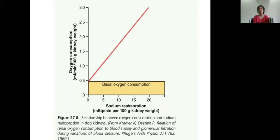This oxygen consumption is mainly supplied by renal blood flow. So whatever renal blood flow is present is mainly responsible for sodium reabsorption. And along with sodium there will be reabsorption of amino acids, glucose, and other necessary metabolites.